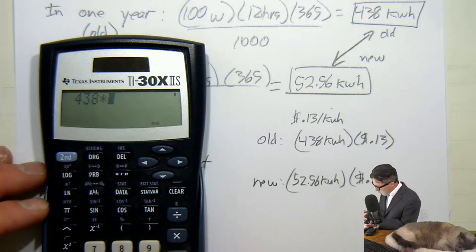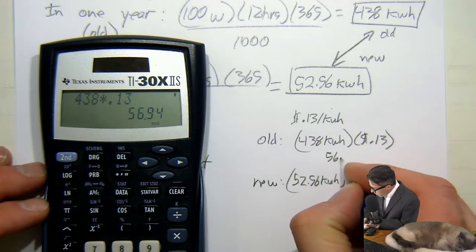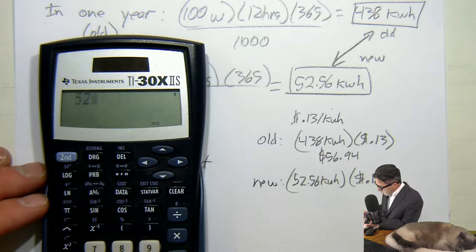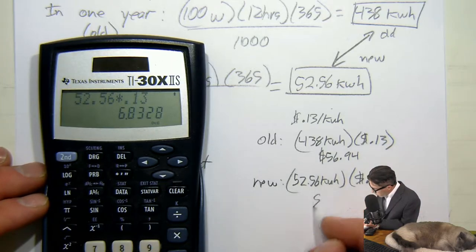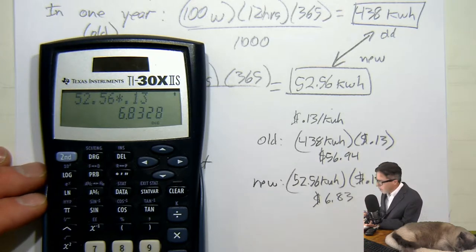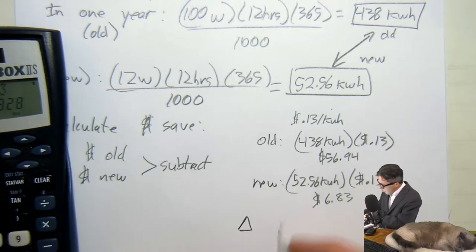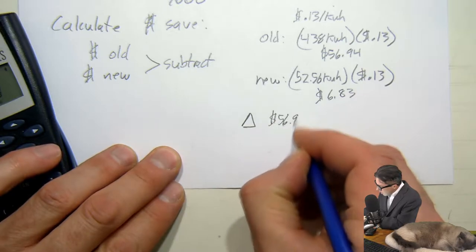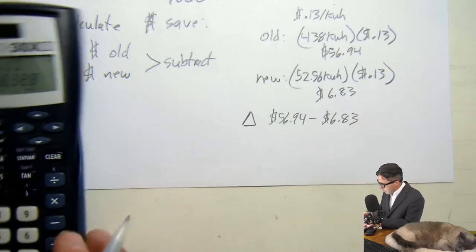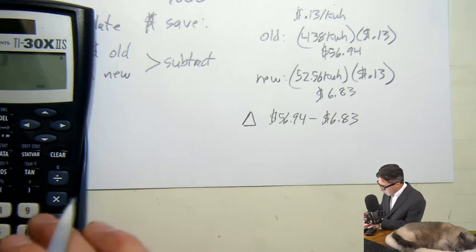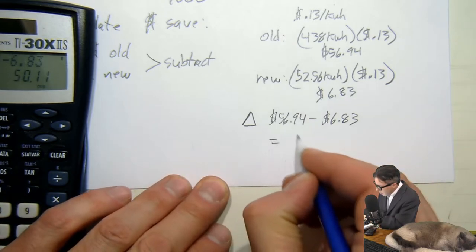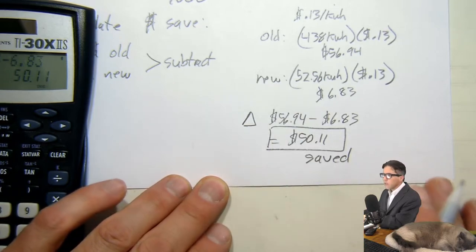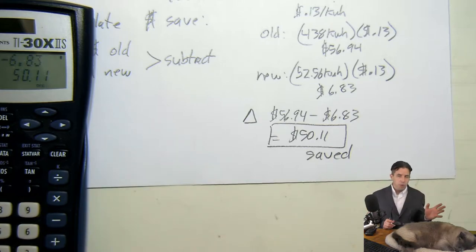So let's see. 438 times 0.13 is $56.94 and 52.56 times 0.13 is $6.83. And then I'm going to subtract the two. So the difference is $56.94 minus $6.83, so 56.94 minus 6.83 is $50.11.